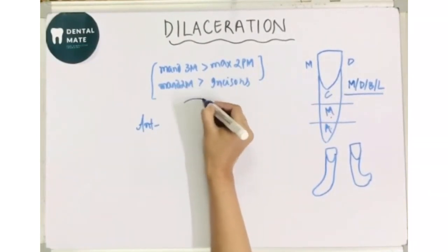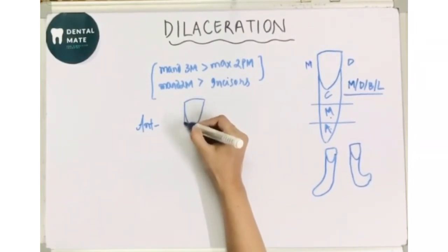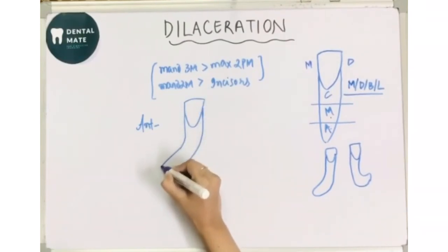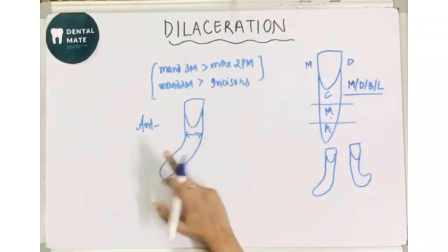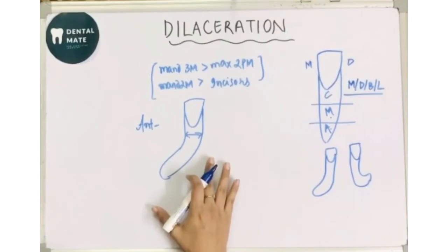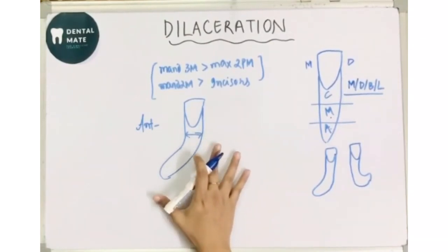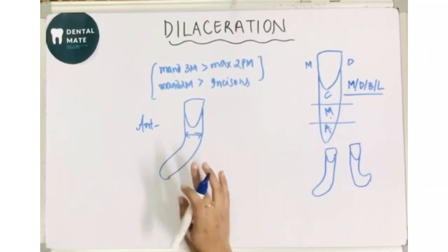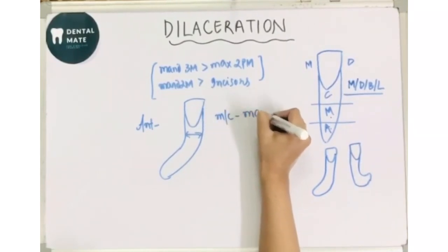So this bend is usually in the coronal half of the tooth. So this crown is normally developed in normal location. This crown is usually located in the coronal half of the tooth in the anterior teeth, and these teeth they mostly fail to erupt. Also, the most commonly affected anteriors are maxillary anteriors.